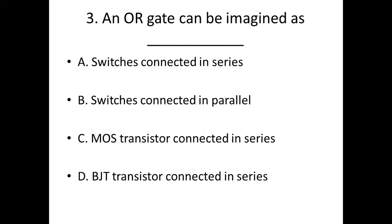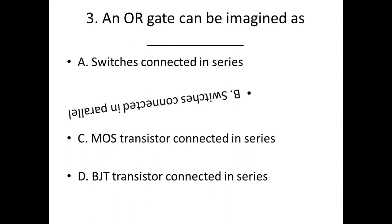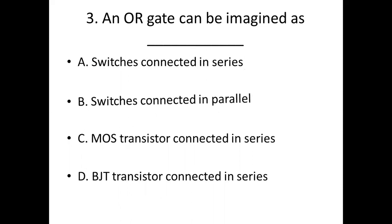Third bit: An OR gate can be implemented as dash. Option A: switches connected in series. Option B: switches connected in parallel. Option C: MOS transistor connected in series. Option D: BJT transistor connected in series. Answer: Option B, switches connected in parallel.